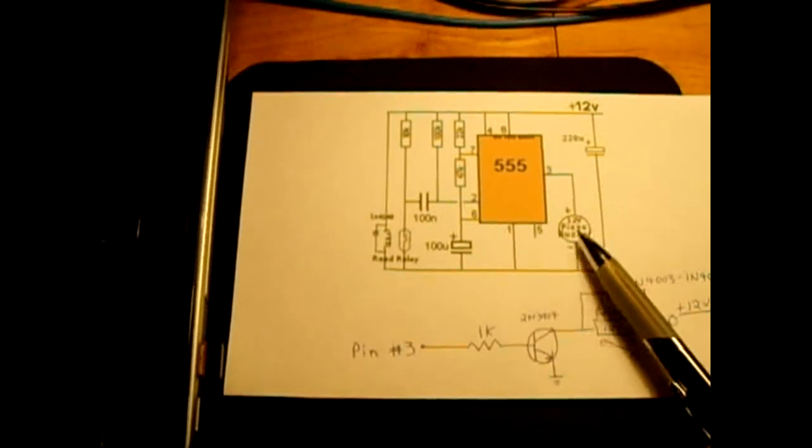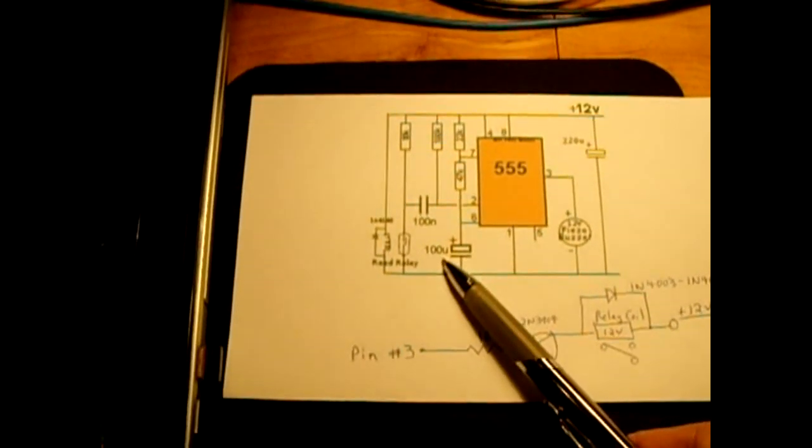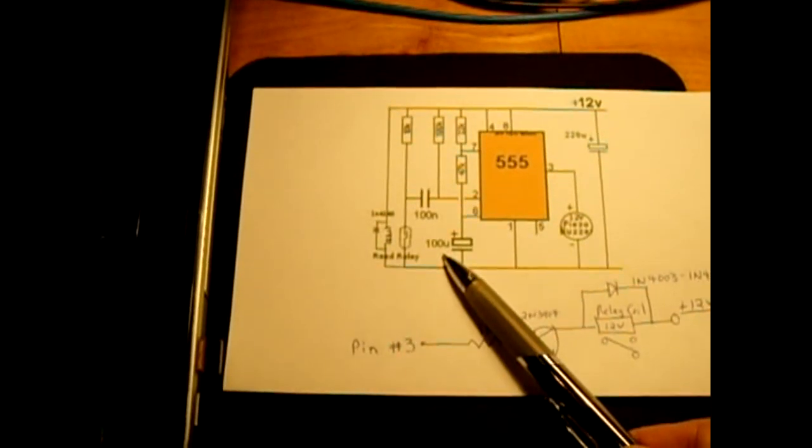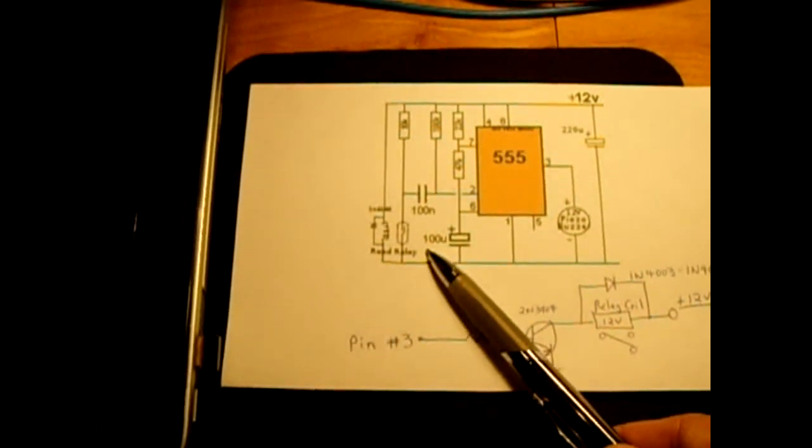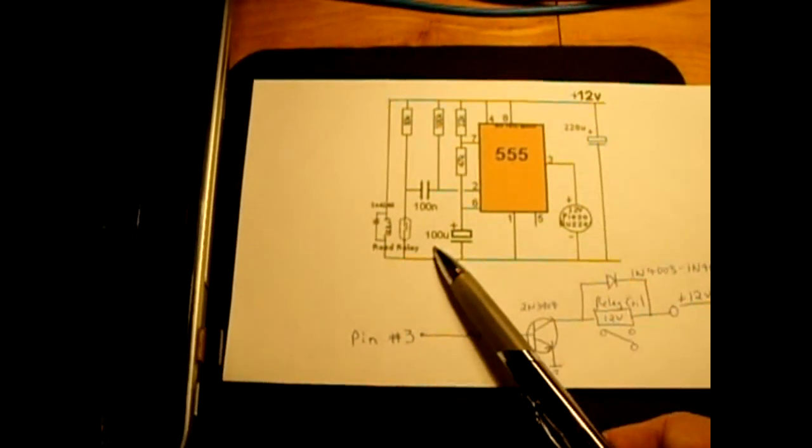If you would like a longer duration, then you would change the value of this capacitor by making it a higher value. A 200 microfarad should give you 10 to 12 seconds versus the 5 seconds with the 100 microfarad.